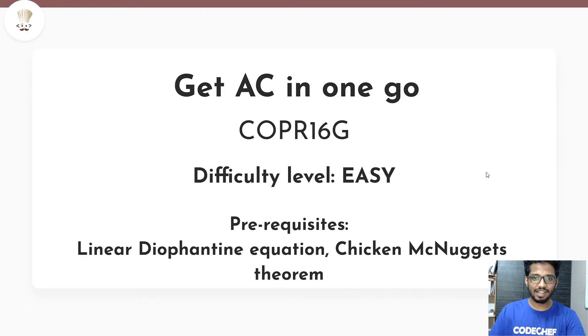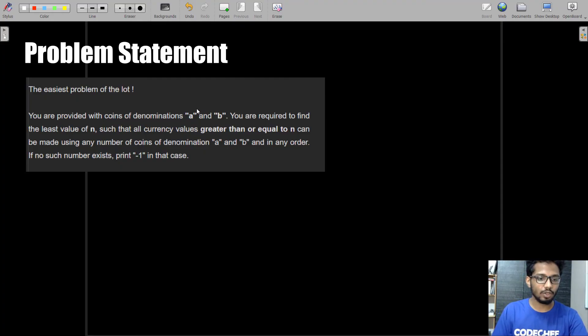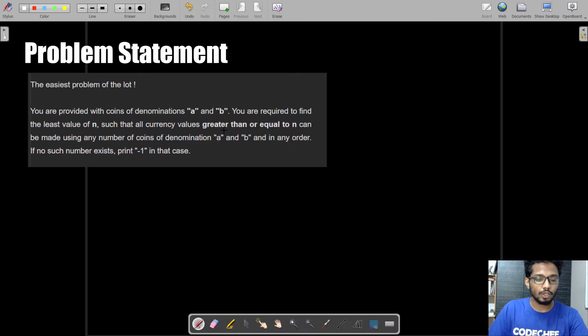The problem statement goes like this: You are provided with coins of denomination a and b. You are required to find the least value of n such that all currency values greater than or equal to n can be made using any number of coins of denomination a and b in any order. If no such number exists, print -1.